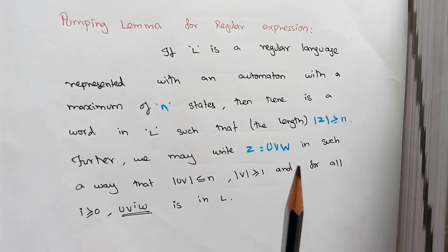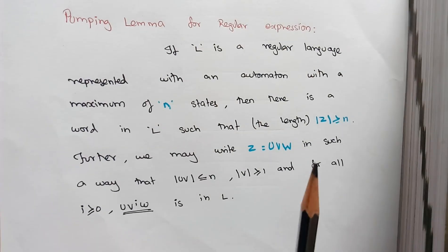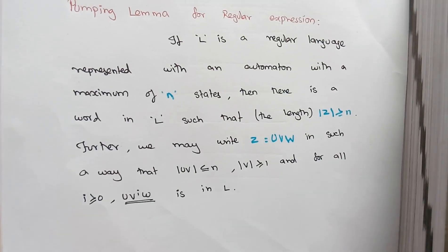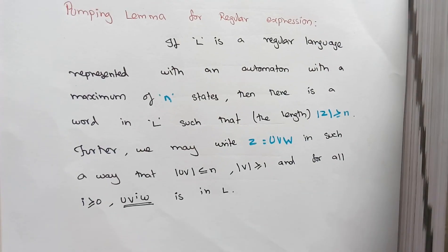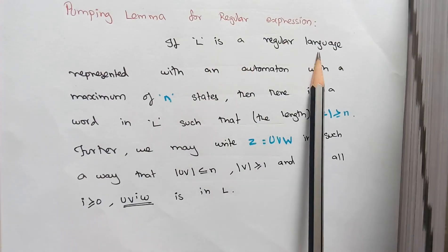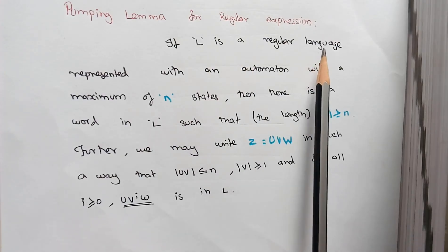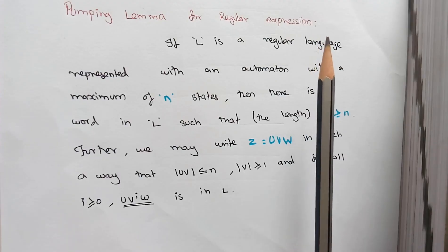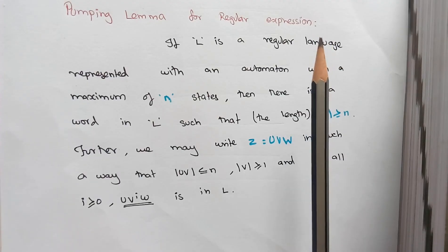Hello everyone. Now we are going to see the pumping lemma for regular expressions. This is a definition that is used to prove some language not to be regular. As per this definition, we are going to consider L as a regular language, and whenever it is a regular language, we can construct an automata for it.